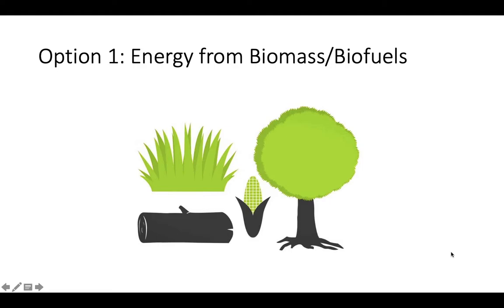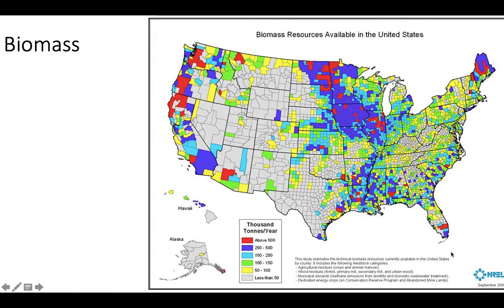The first option is getting energy from biomass or biofuels. This could be as simple as burning wood. If you take a look at this map, you can see different amounts of biomass produced in different areas of the United States. The red and purple areas are producing a lot of biomass per year, whereas the gray or yellow areas are producing very low biomass per year.